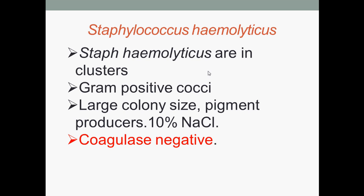Staphylococcus haemolyticus are arranged in clusters and are large Gram-positive cocci. Their colony size is large and they are pigment producers. They usually grow in the presence of 10% sodium chloride and are coagulase negative. They are usually found at the axilla (armpit), perineum, and inguinal areas. They are highly antibiotic resistant and have the ability to form biofilms, which makes them very difficult to treat. They are categorized as opportunistic pathogens.